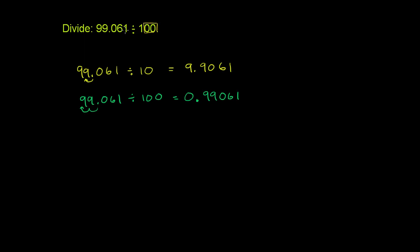You could just count the number of zeros. If you're dividing by 100, which has two zeros, you can move the decimal two spaces to the left. That's fine to do, especially as a fast way.